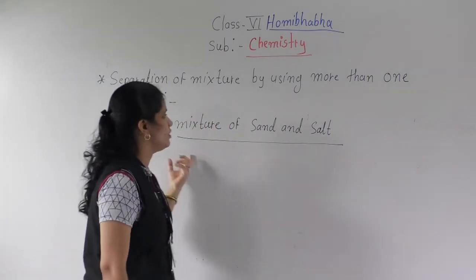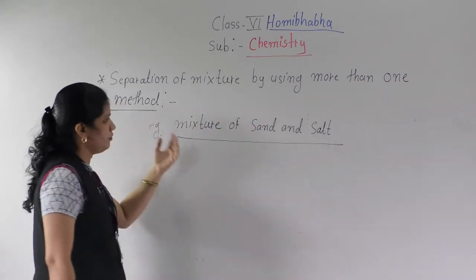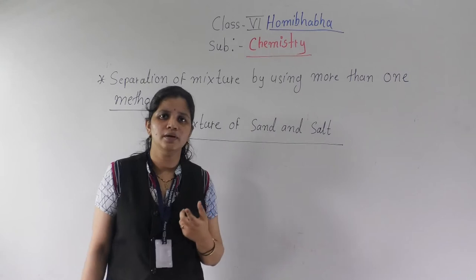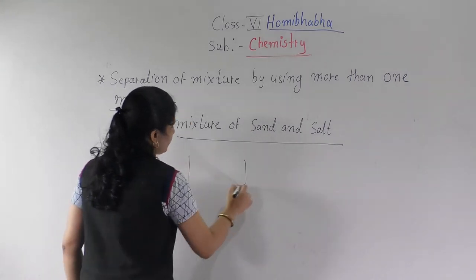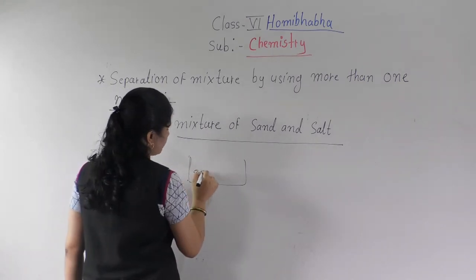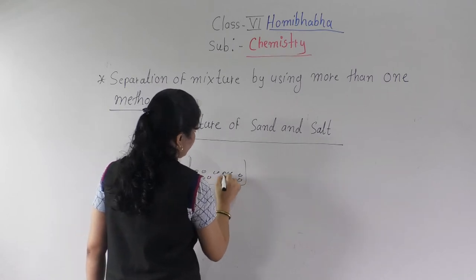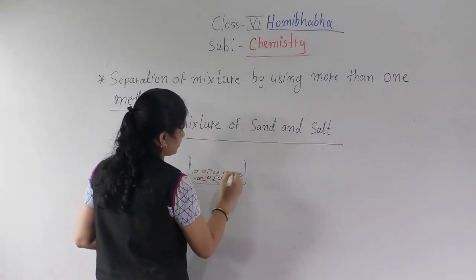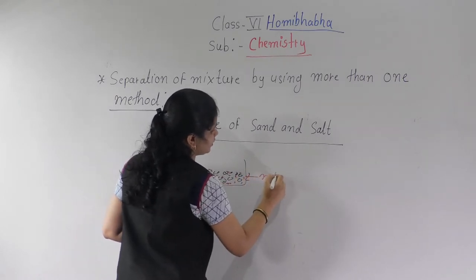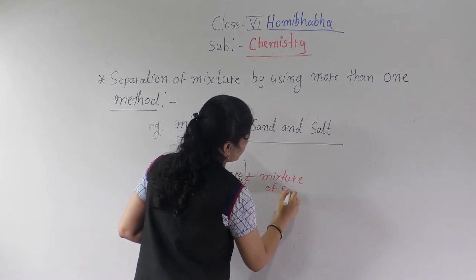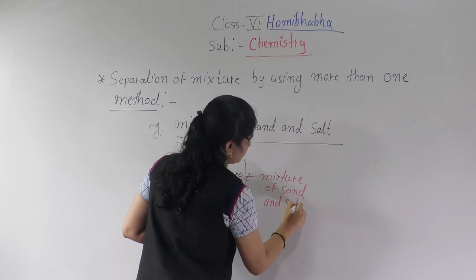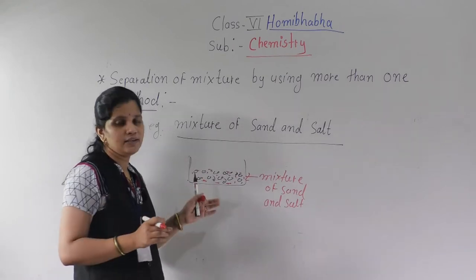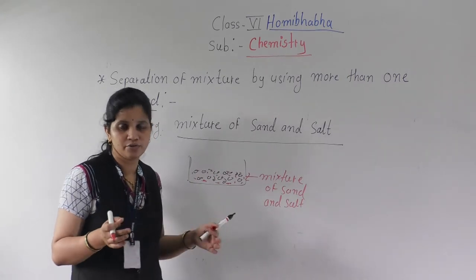Now here is one example: a mixture of sand and salt. Think about how we can separate this mixture. Can we use the hand-picking method? No, because the particle size of sand is very small and salt is also very small, so we can't use that.